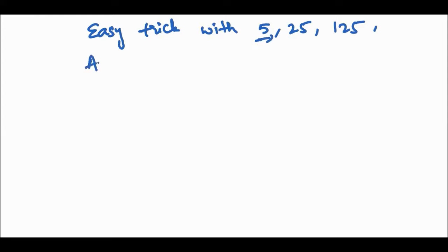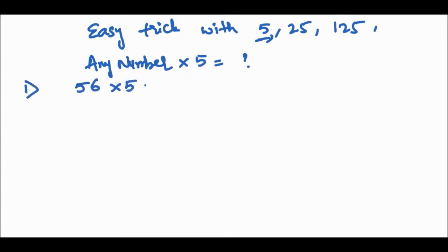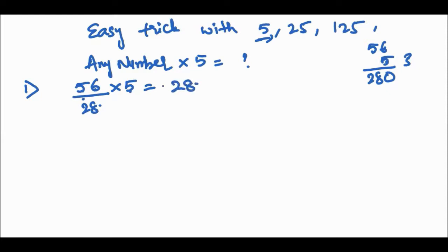First, let's do any number into 5. Take the example of 56 into 5. The traditional method: 5 × 6 = 30, carry 3, 5 × 5 = 25, plus 3 = 28. But the trick is: half of 56 is 28, so the answer is 280. Just take half the number and add a zero.